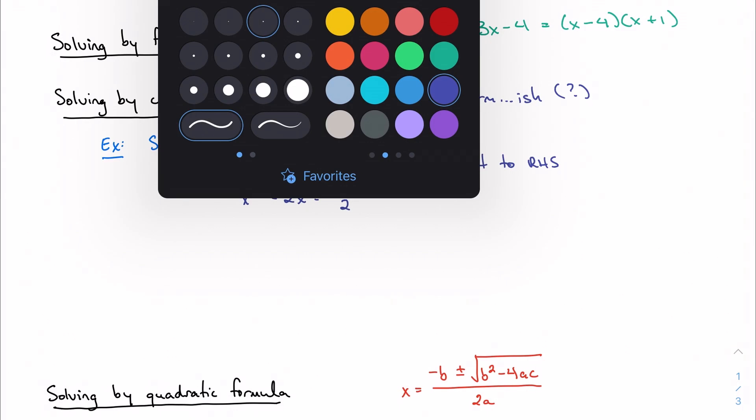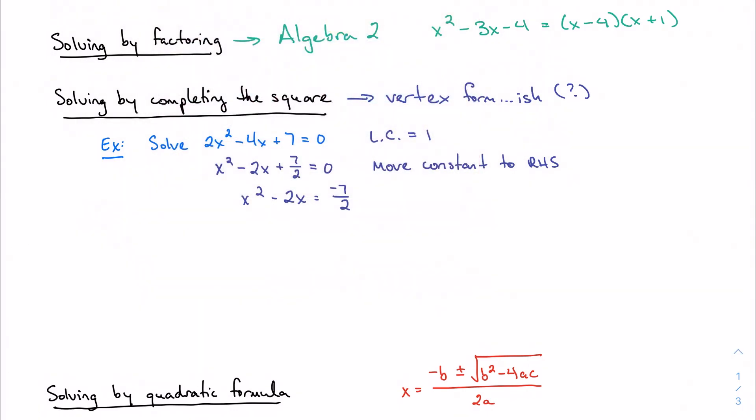And now here comes the big step. Here comes the most important step, which is my goal is to turn this side over here into a perfect square trinomial, something that's in this a plus or minus b squared equals a squared plus 2ab plus b squared form. So in order to do that, I'm going to add half of b squared to both sides to keep things equivalent.